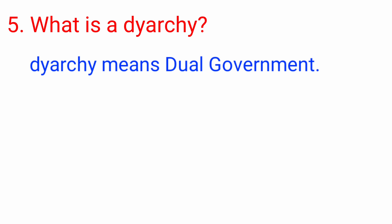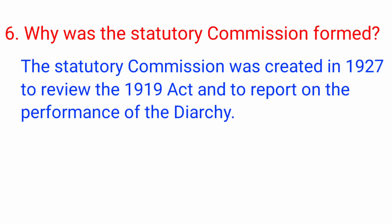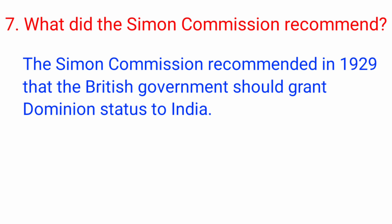Question number 5: What is a diarchy? Answer: diarchy means dual government. Question number 6: Why was the statutory commission formed? Answer: the statutory commission was created in 1927 to review the 1919 Act and to report on the performance of the diarchy.